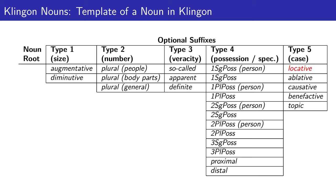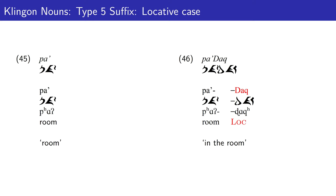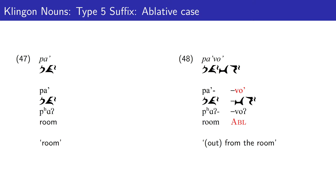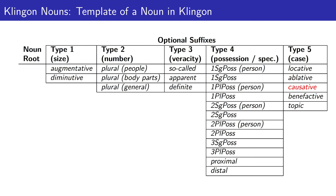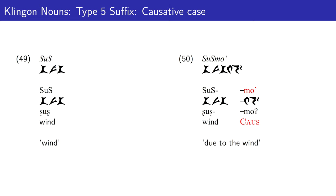Finally, we have type 5 suffixes. A type 5 suffix marks case. Here we have a locative suffix, meaning possibly 'in the room'. The second type 5 suffix marks ablative case, meaning 'away from' — for example, 'from the room', implying going out from the room. Next, the causative suffix 'mo'': 'shosh' is wind, so 'shoshmo'' would be 'due to the wind'.